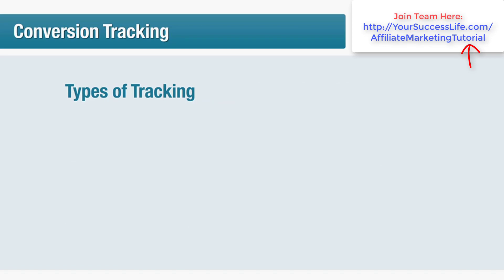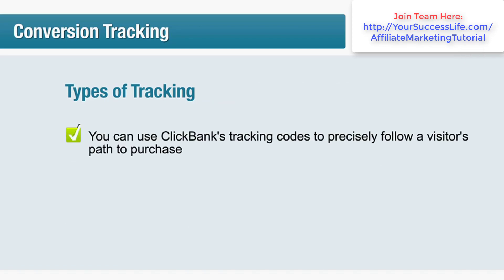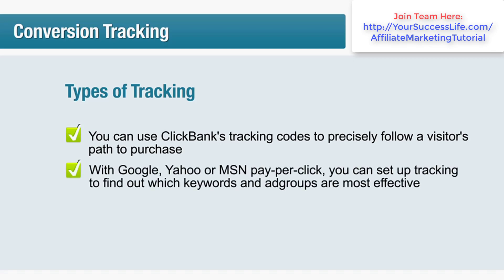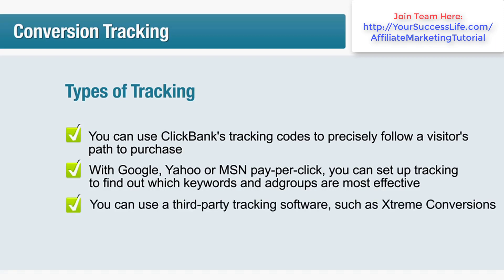There are several different methods for tracking. If you're a Clickbank affiliate, you can use Clickbank's tracking codes to precisely follow a visitor's path to purchase. By assigning a unique tracking code to different ad groups and promotions, you can determine exactly which ad brought you the sale. If you use Google, Yahoo or MSN pay-per-click, you can set up tracking to find which keywords and ad groups were most effective. Alternatively, you can use third-party tracking software such as Extreme Conversions, which combines data from all affiliate networks and pay-per-click advertising to show you exactly which keywords are most profitable.